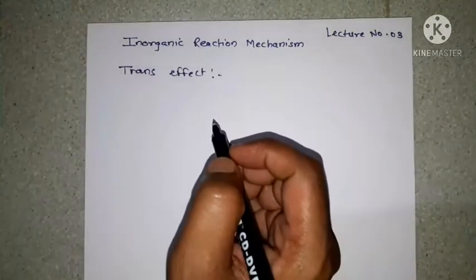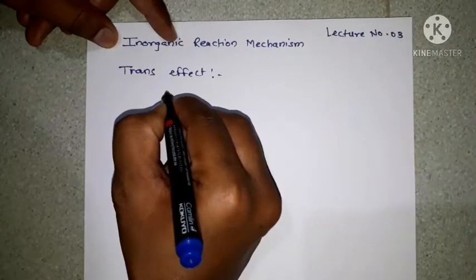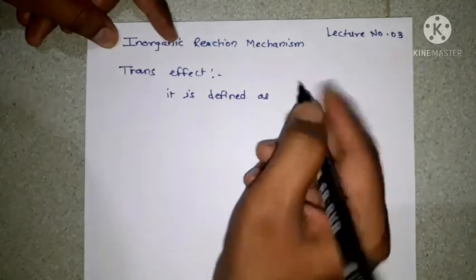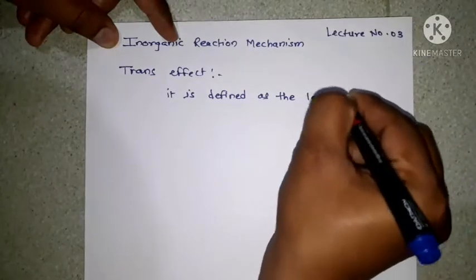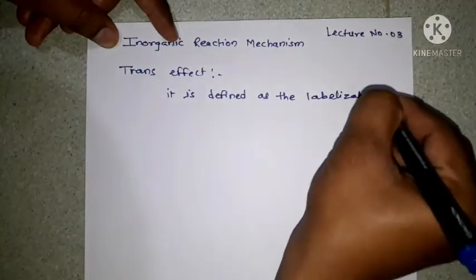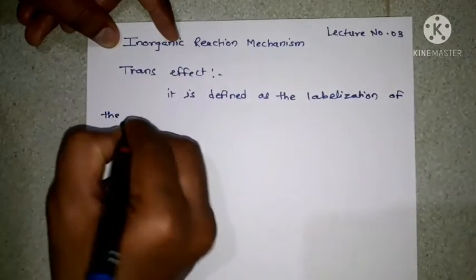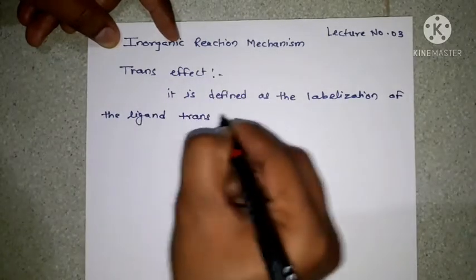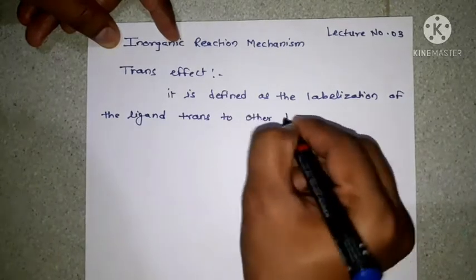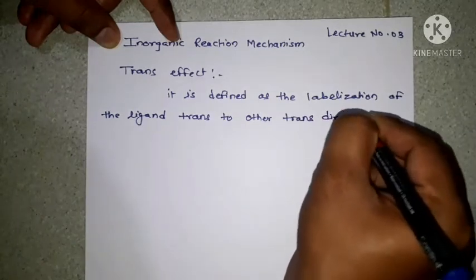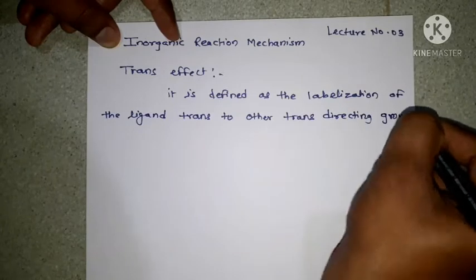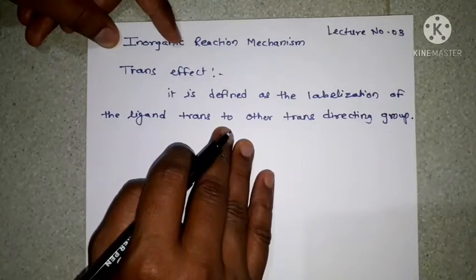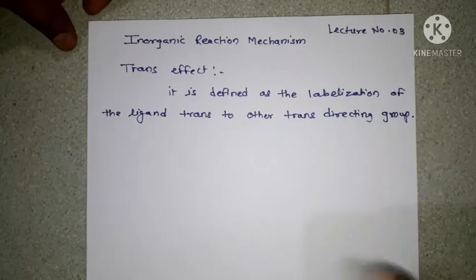Let us see first the definition of trans effect. It is defined as the labilization of the ligand trans to other trans directing group. This is the definition of trans effect, and this definition is explained by using an example.